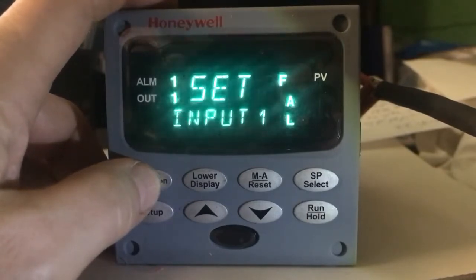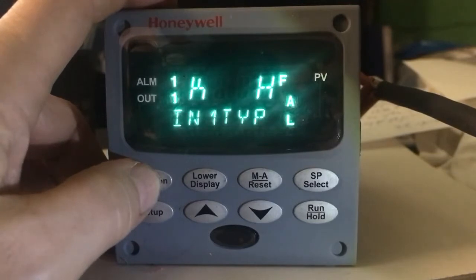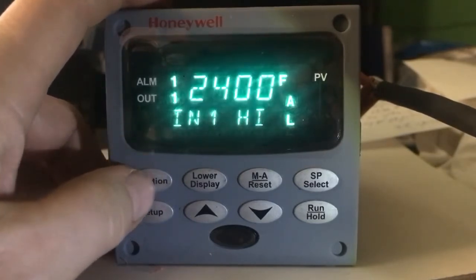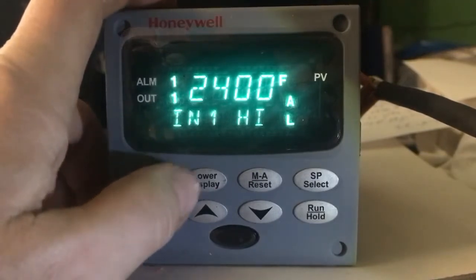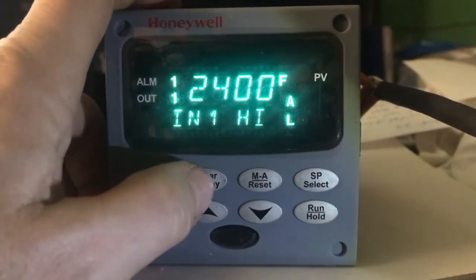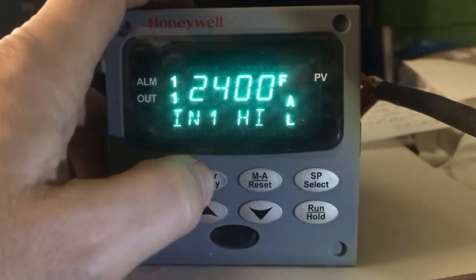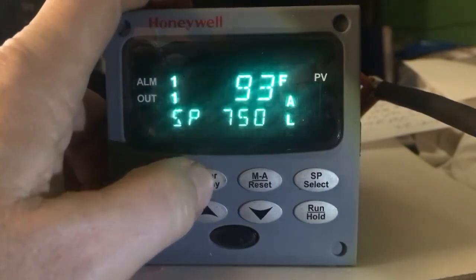The 2400 degrees is the high limit for the type K thermocouple. If you want to go back to the original display, you press the lower display button and it brings you back to the original display.